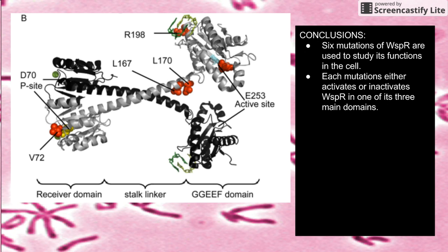One really important site to note is D70. This is the site that gets phosphorylated by WISP-E, and phosphorylating this site is really important for activating the protein. We'll see that in this particular mutant, whatever else you do to the protein it just won't work, because this phosphorylation site is basically broken.